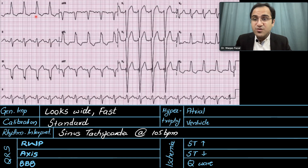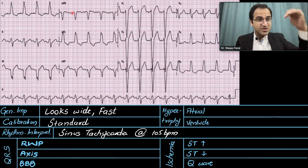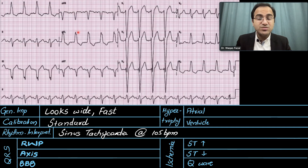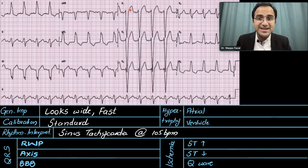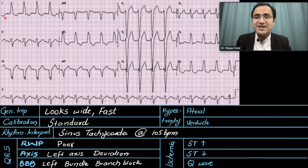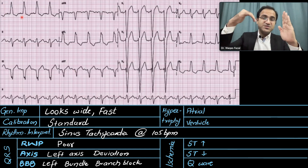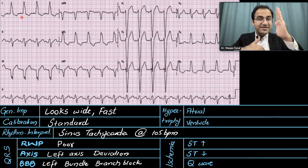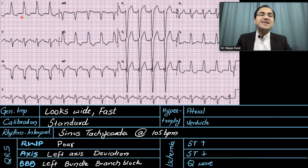Looking at R wave progression: in the hexaxial leads AVR should be negatively deflected; in all other hexaxial leads it should be positive. It is negatively deflected in AVF, which is not normal — so it is poor R wave progression. In precordial leads V1/V2 are negative and V5/V6 are positive, which is normal. For the axis, lead 1 is pointing upward and AVF is pointing downward — they are pointing away from each other, so that is a left axis deviation.